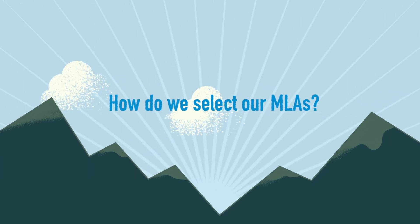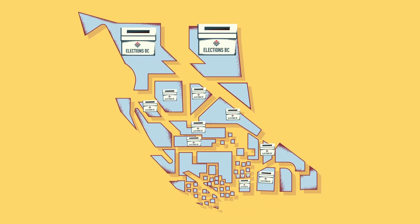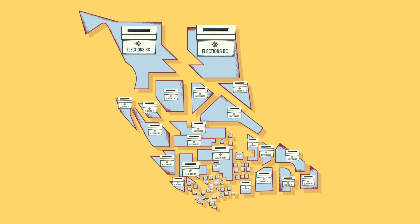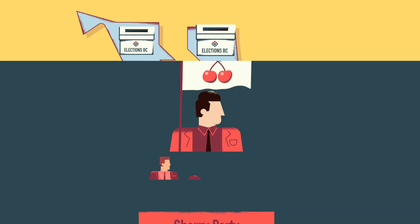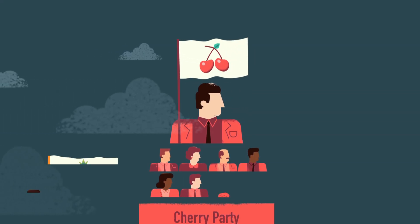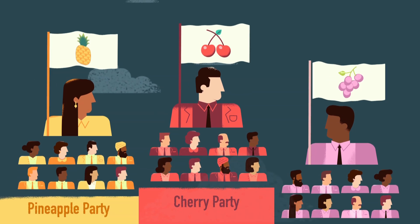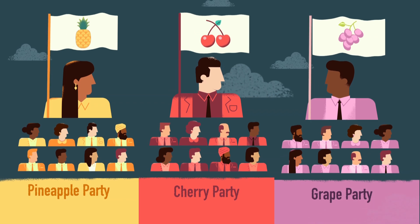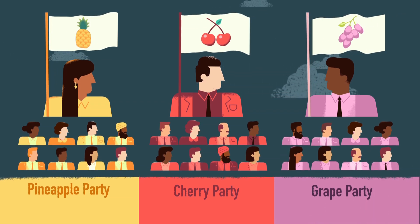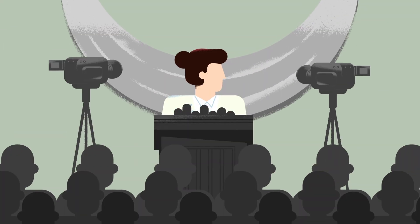Let's review the election process. The province is divided into electoral districts, and each district has its own election race. Political parties endorse individuals, called candidates, to represent their party in one of the electoral districts and compete for the job of MLA. These candidates generally share the same views and goals as their party. Some candidates also run independently, separate from any political party.